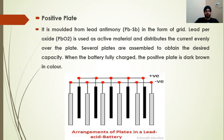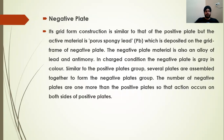Next is the negative plate. It has a grid-form construction similar to that of the positive plate, but the active material is porous spongy lead. The negative plate material is also an alloy of lead and antimony. In the charged condition, the negative plate is grey in color.